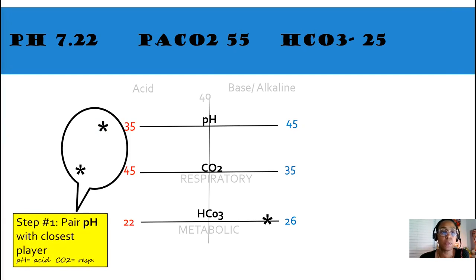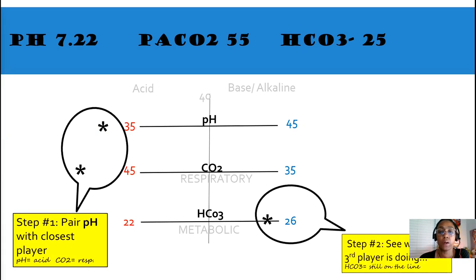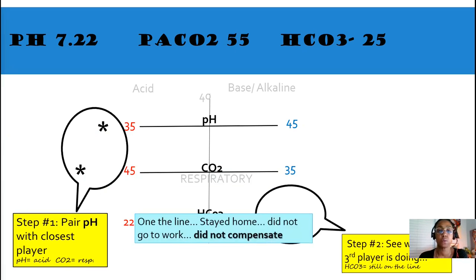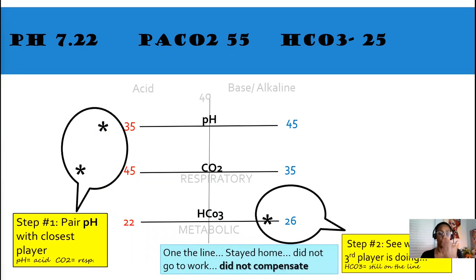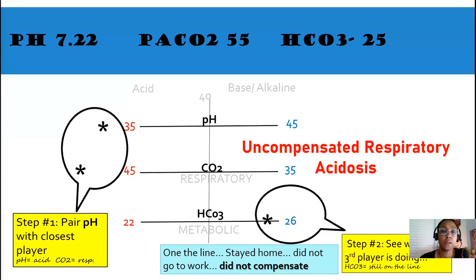Your first step is to pair the pH with the closest player. In this case, it's the CO2 or respiratory. Second step. We're going to see what the third player is doing. In this case, our bicarb is still on the line. Still at home. So, no compensation is happening. Our interpretation of this ABG is uncompensated respiratory acidosis.